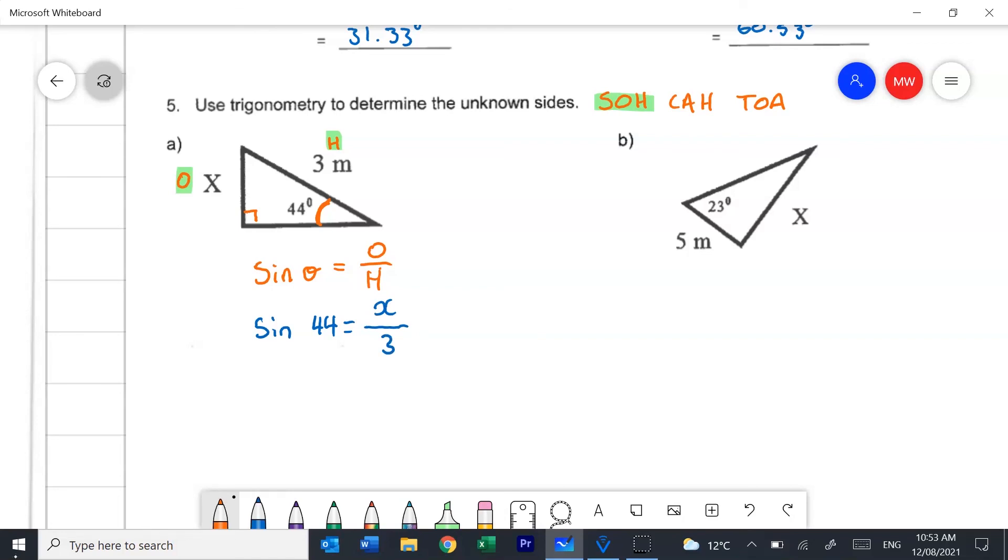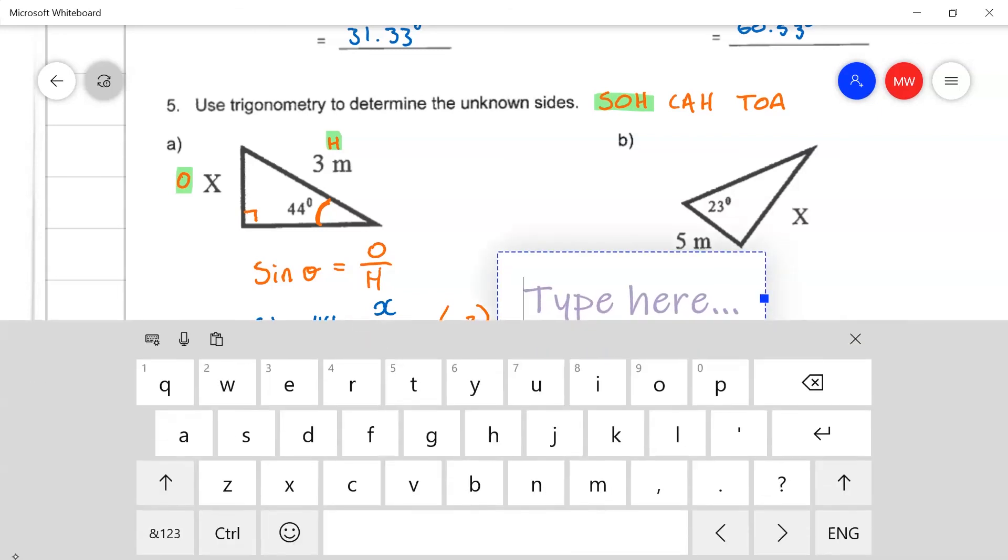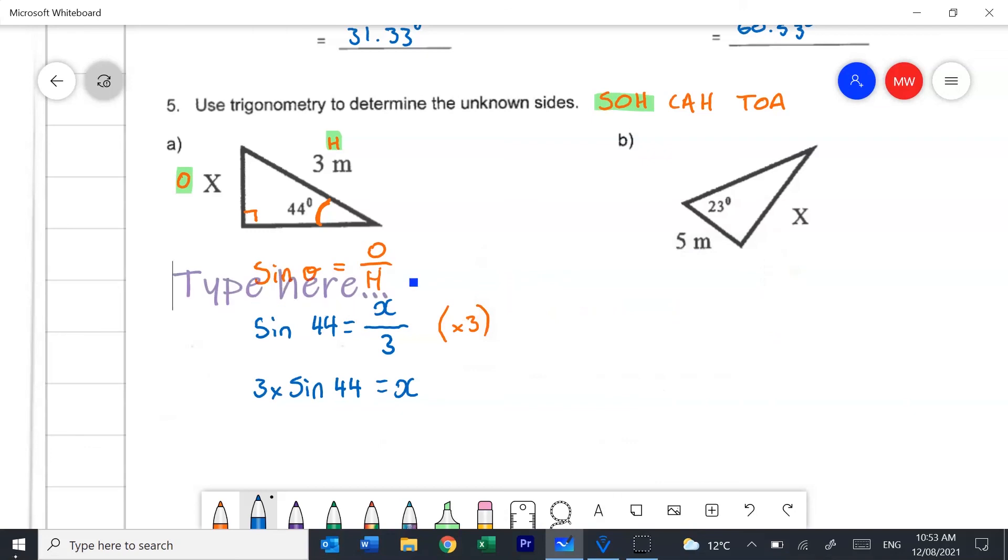And then at this point we switch to balance method and we'll get rid of that 3 it says to divide so we're going to times. Anything I do to one side in an equation I have to do to the other. And at this point I put it into my calculator and I will find that X is equal to 2.08. Having a look there's units so I'll put them in they are meters and I'll finish that question.